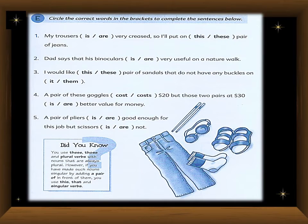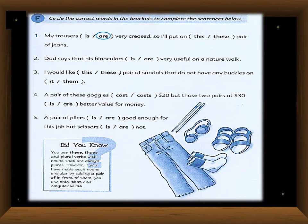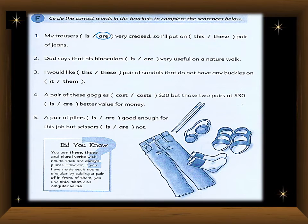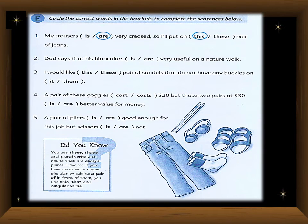First sentence: 'My trousers ___ very creased so I will put on a pair of jeans.' 'Trousers' is plural, so use 'are': 'My trousers are very creased.' For 'a pair of jeans,' because 'pair' is singular here, use 'this pair of jeans.' Second sentence: 'Binoculars ___ very useful.' Since 'binoculars' is plural, use 'are': 'Binoculars are very useful on a nature walk.'